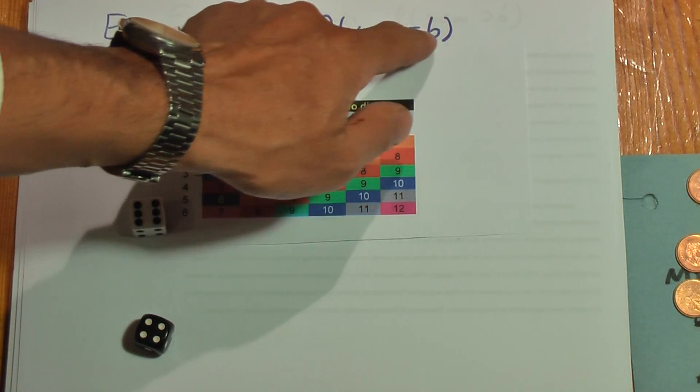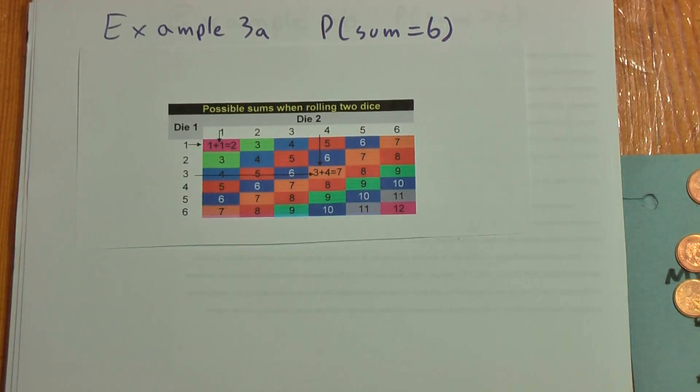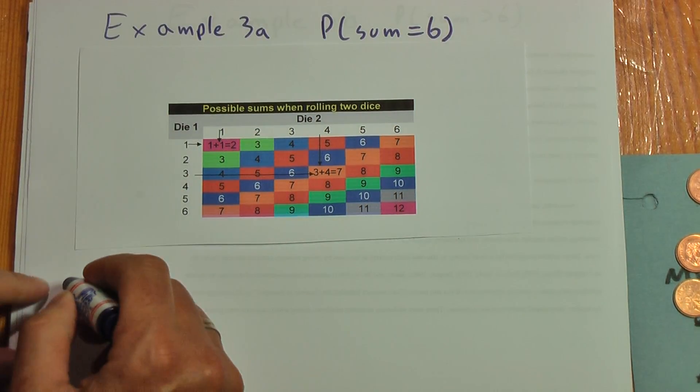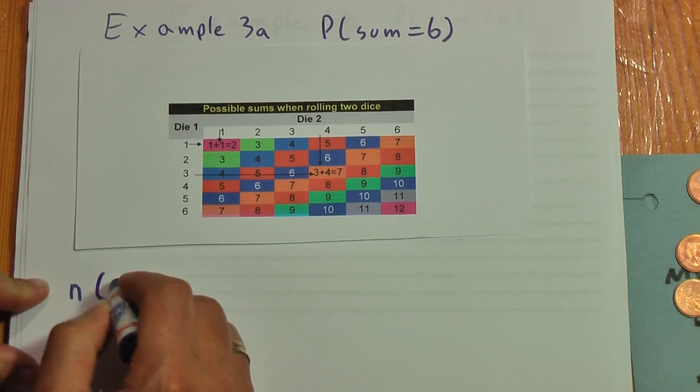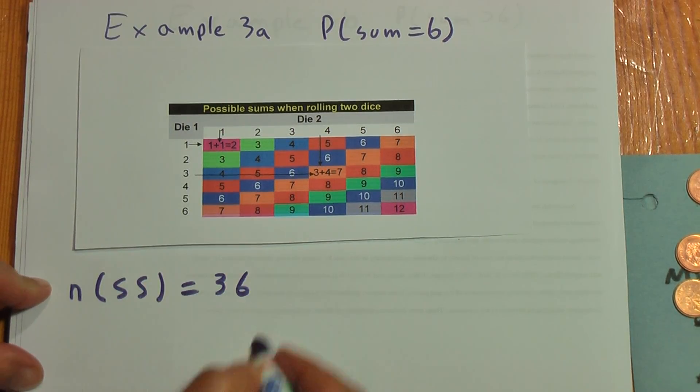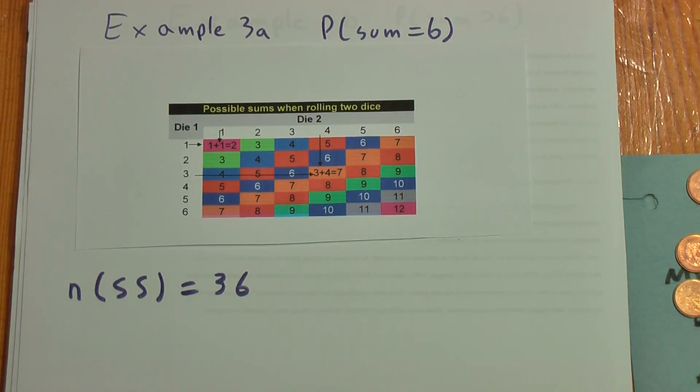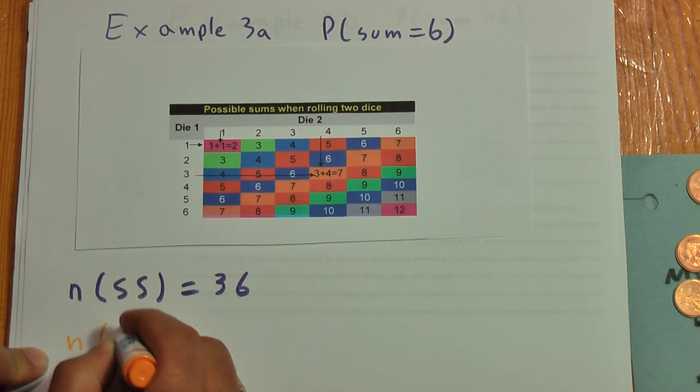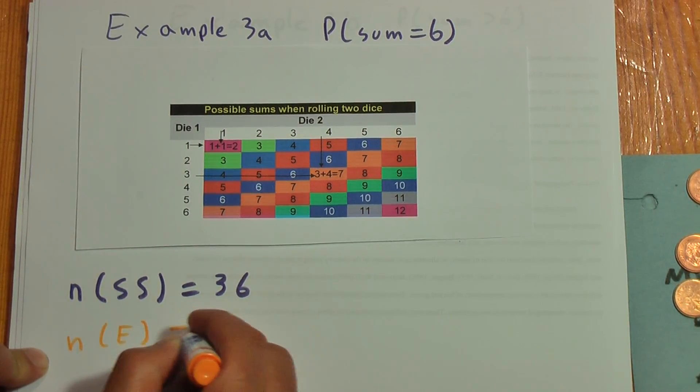What I want here is I want the probability that the sum is 6. What I do know is that the sample space is always 36. The size of the sample space is always 36.